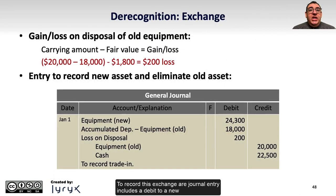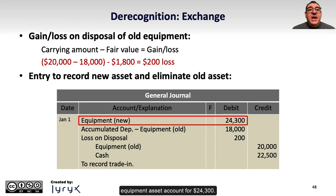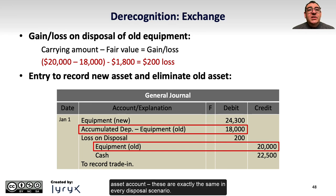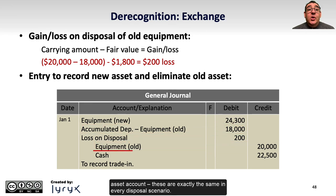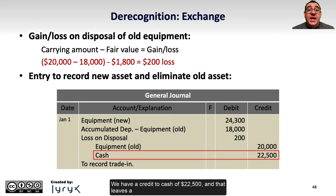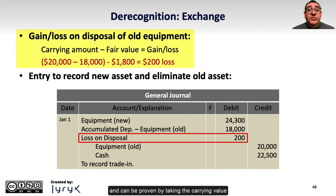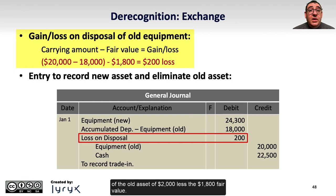To record this exchange, our journal entry includes a debit to a new equipment asset account for $24,300. Notice again the same $18,000 debit to accumulated depreciation and $20,000 credit to the old asset account — these are exactly the same in every disposal scenario. We have a credit to cash of $22,500, and that leaves a balancing amount of $200 on the debit side. That debit must be considered a loss on disposal, proven by taking the carrying value of the old asset of $2,000 less the $1,800 fair value.